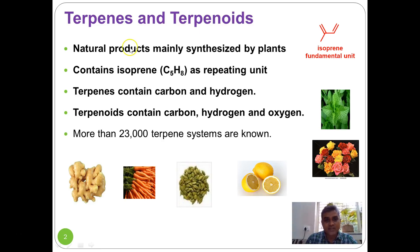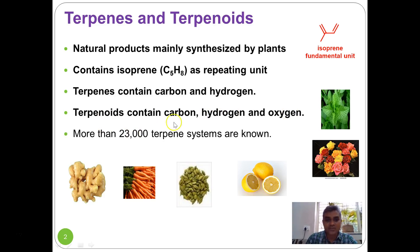Terpenes and terpenoids are natural products mainly synthesized from plants. These compounds are made up of the isoprene unit — isoprene is a repeating unit in their structures. When a compound contains only carbon and hydrogen it is called a terpene. When it contains carbon, hydrogen and oxygen it is called a terpenoid — in other words, the oxygenated form of terpenes is called terpenoids.